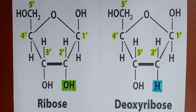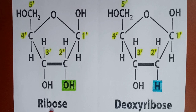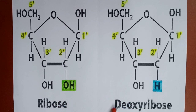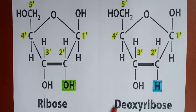Hi friends, in this video let's learn the difference between ribose and deoxyribose sugars. Both are pentose sugars, that means they have five carbons.